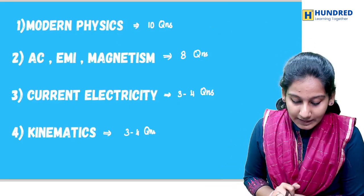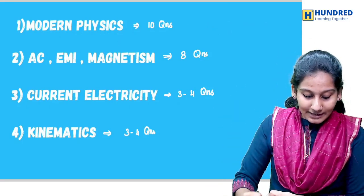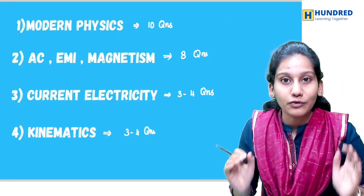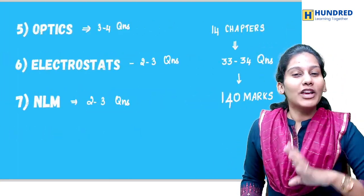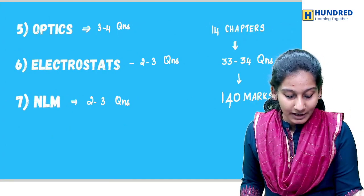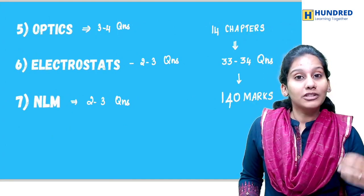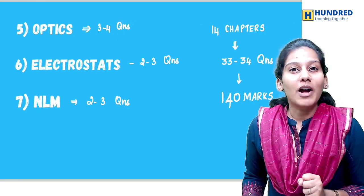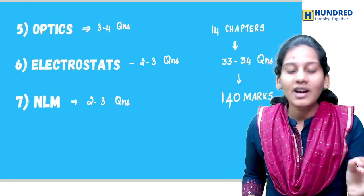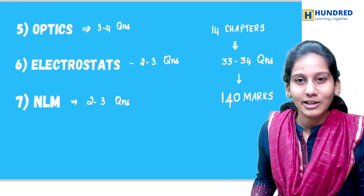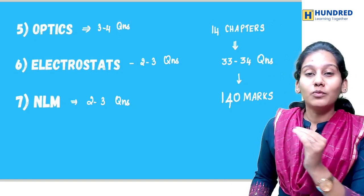AC, EM, Magnetism - 8 questions. Current Electricity, Kinematics - almost 3 to 4 questions. Optics, Ray and Wave Optics - 3 to 4 questions. Electrostats and NLM - 2 to 3 questions. So on average, there are 14 chapters, 30 to 34 questions. Now we have 140 marks.